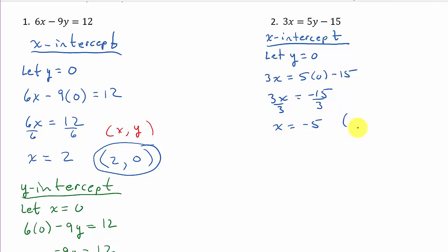So what's our point? Well, remember it's in the form x, y. x is negative 5, y was 0. So there's my x intercept.